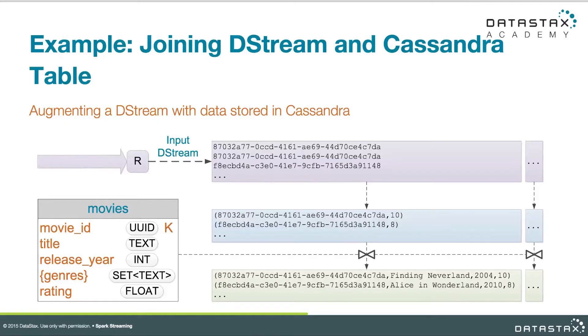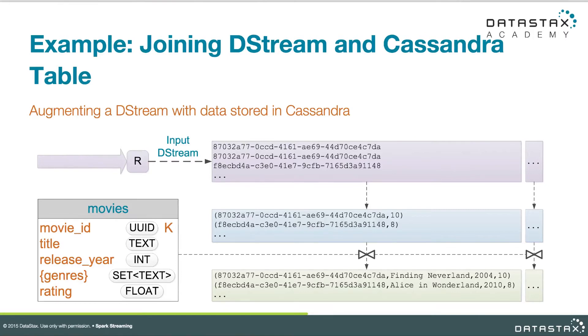Let's work through some examples. We're going to start with diagrams because this stuff is fairly abstract. Here we have an input stream shown at the top in purple, labeled input D-Stream. It comes through a receiver, and what we have is a series of UUIDs — we're going to assume those are movie IDs from our movie database. We're going to perform a transform on that D-Stream, which is count by value, and now we're getting a count of unique IDs in that second RDD shown in blue in the middle. Then we want to join that with data from a Cassandra table — we want to augment that stream with actual metadata from our movie database. This is a classical Spark streaming application, and here is the code.